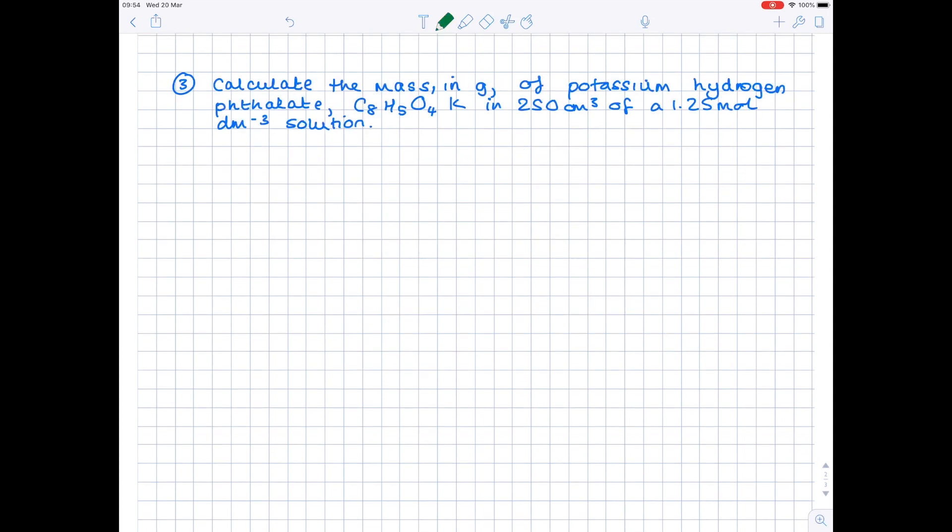Question 3. We're looking at mass of solutes this time. So calculate the mass in grams of potassium hydrogen phthalate in 250 centimetres cubed of a 0.125 molar dm⁻³ solution.